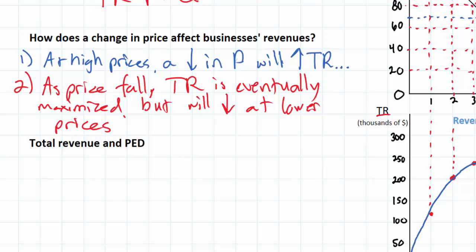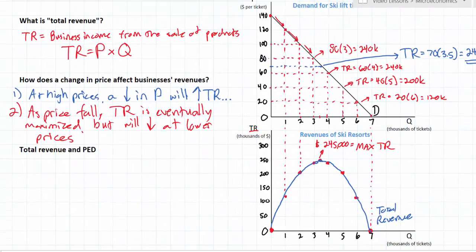The simple calculation of multiplying the price times the quantity and determining the total revenue will always result in a parabolic total revenue curve that reaches a maximum somewhere between the highest possible price firms can charge and a price of zero.